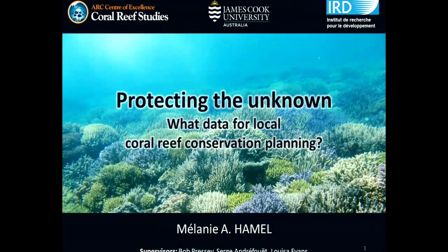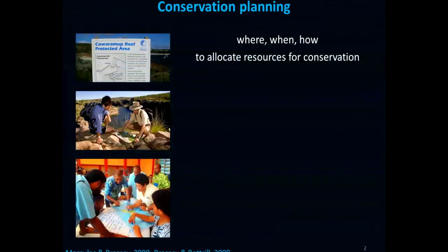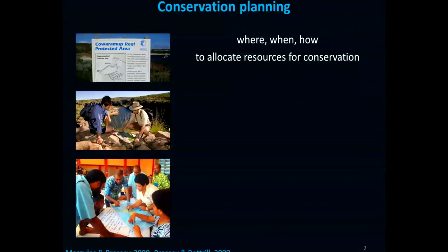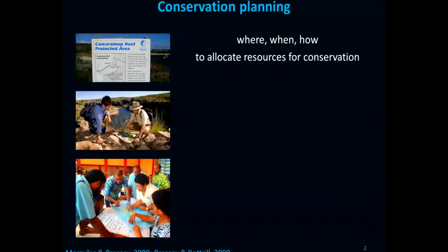This is pretty much what conservation planning aims to do. Conservation planning is an approach and process of deciding where, how, and when to allocate limited conservation resources. And this is also used for protected area design and implementation.